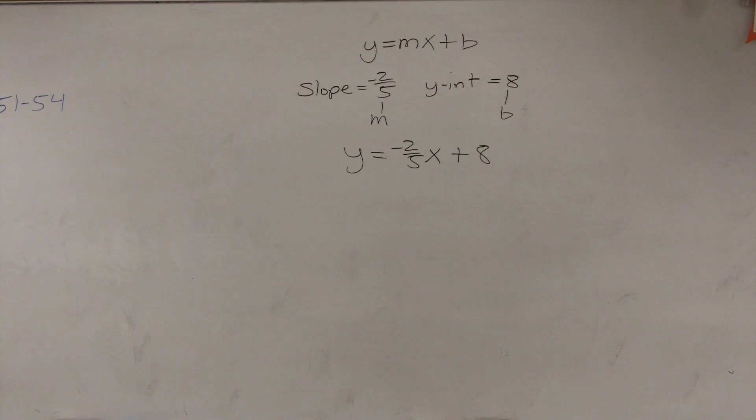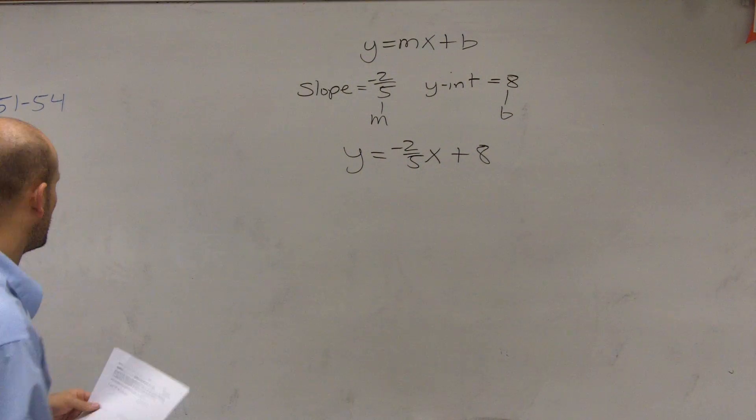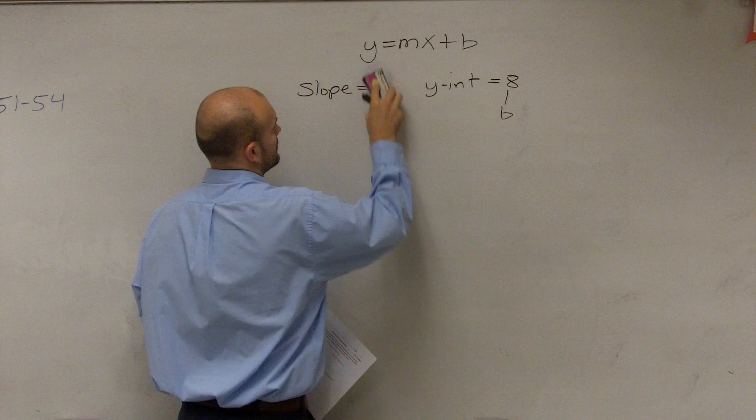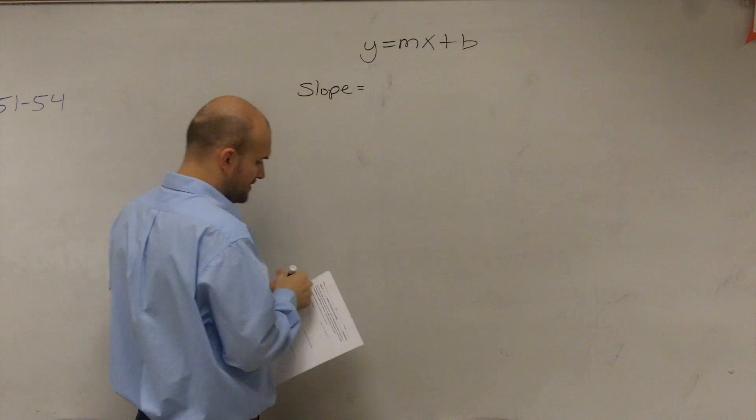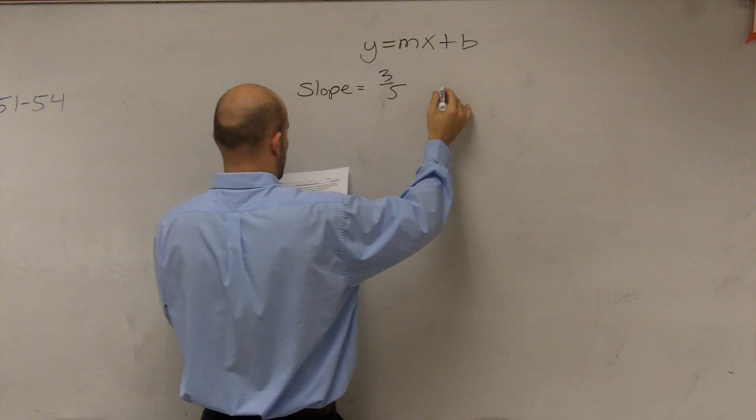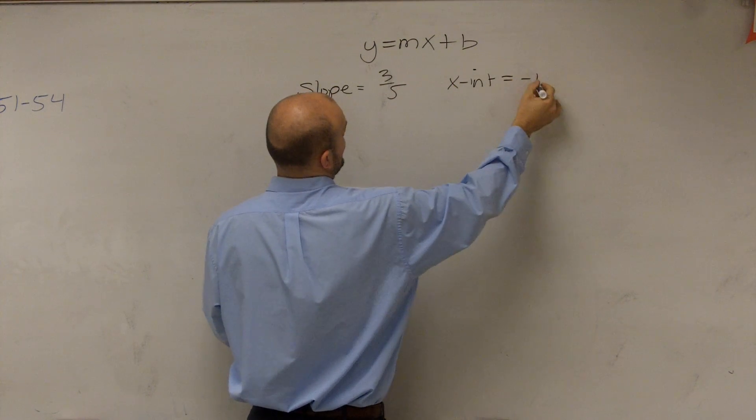So let's go with question number two. Question number two says, now, rather than having something simple like this, now I'm going to give you something with a slope. I'm going to give you a slope of 3 fifths and a x-intercept equal to negative 10.